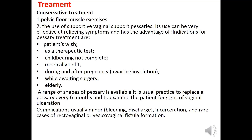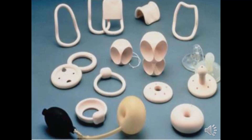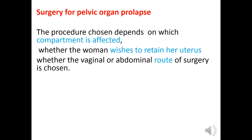Different shapes of vaginal pessaries are available. For surgical management of pelvic organ prolapse, the procedure chosen depends on which compartment is affected, whether the woman wishes to retain her uterus, and whether the vaginal or abdominal route of surgery is chosen.